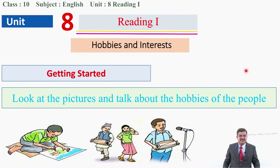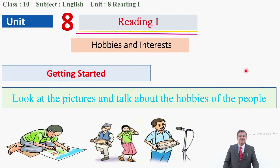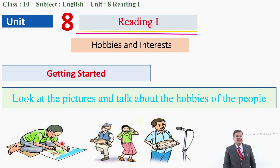Getting started: look at the pictures and talk about the hobbies of the people. Dear student, can you see some pictures here? Can you identify the first and second picture? What do you see in the first picture? Yes, you're right — a boy is painting a picture. In the first picture, a very smart boy is painting a picture. He is busy in drawing or painting.